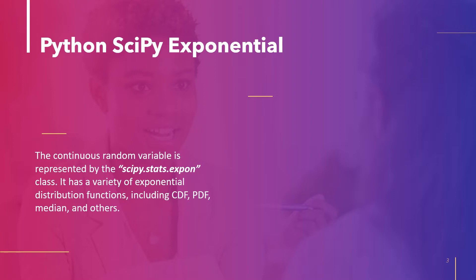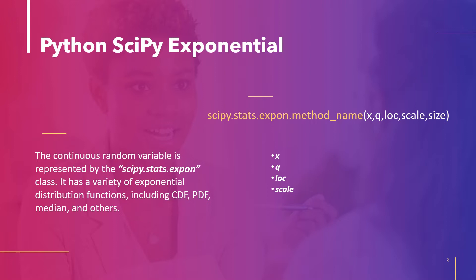The syntax of the method is as follows: scipy.stats.expon.method_name, with parameters: x, used to specify the random variable; q, which represents the probabilities; loc, used to specify the mean, with a default value of 0; and scale, used to specify the standard deviation, with a default value of 1.